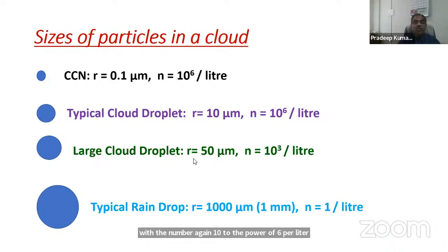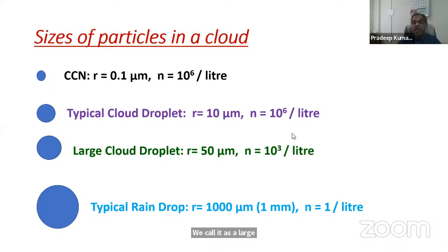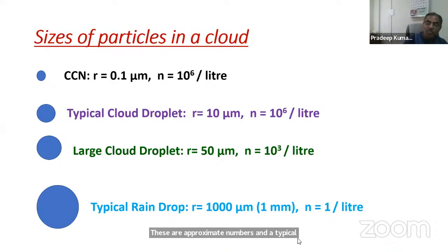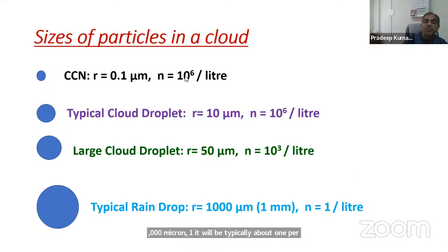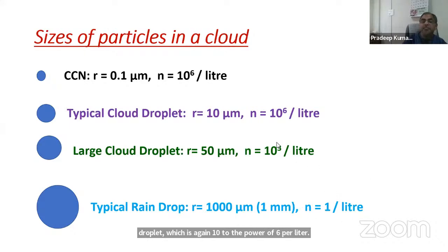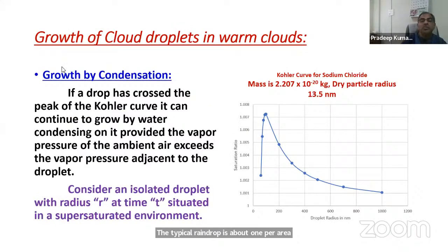A large cloud droplet of around 50 microns has a number concentration of about 10³ per liter. A typical raindrop of 1000 microns — one millimeter — has a concentration of about 1 per liter. So from a CCN at 10⁶ per liter, through a cloud droplet also at 10⁶ per liter, to a typical raindrop at 1 per liter. Now let us look at the growth of cloud droplets in a warm cloud.